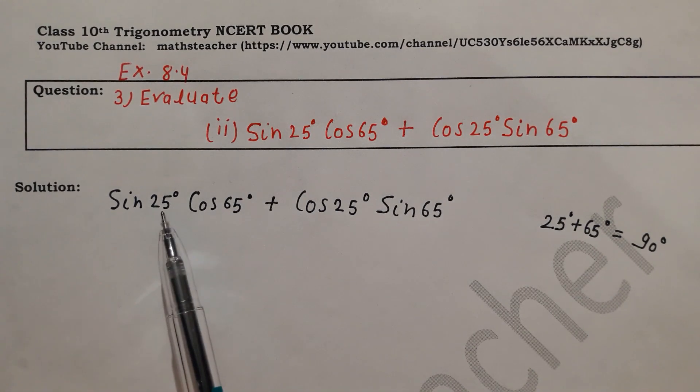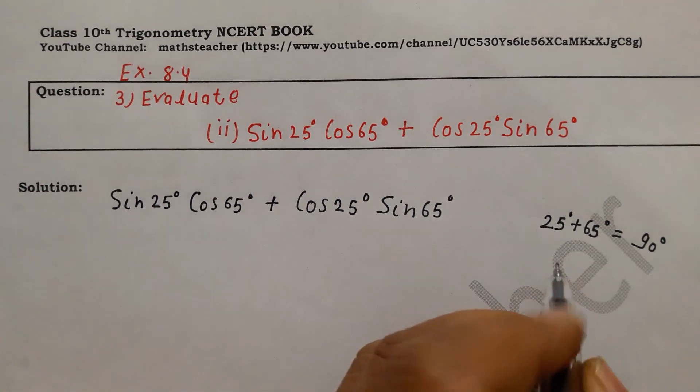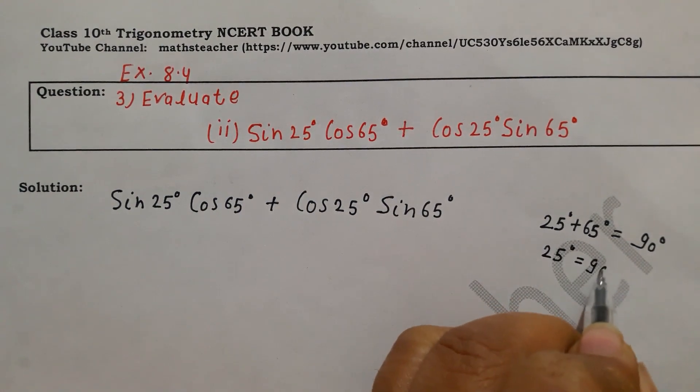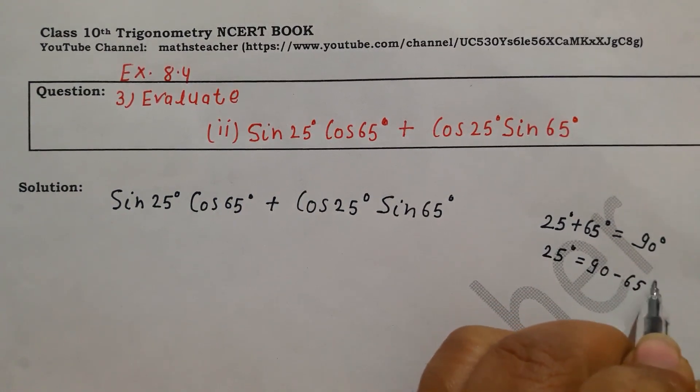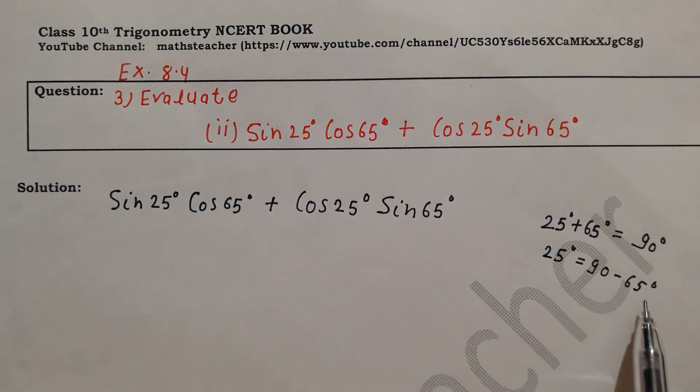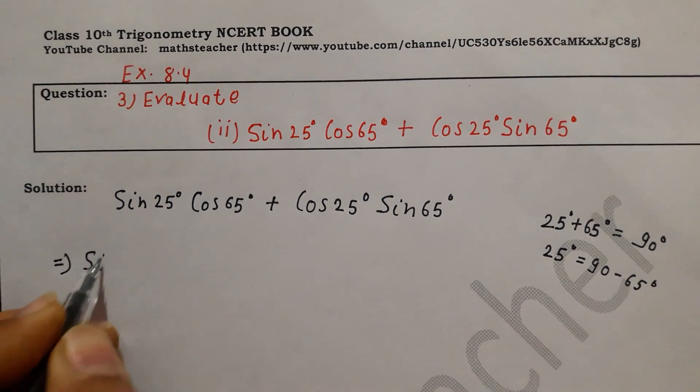Either we change 25 or 65. So what do we do? We change 25. So how much of this value will be? 90 minus 65 degree. 65 is here plus, so what will happen in the right hand side? Negative. So we have to put this value, where we have to put the value.